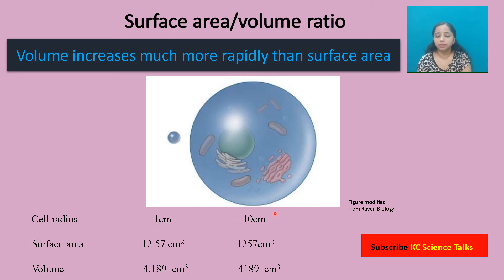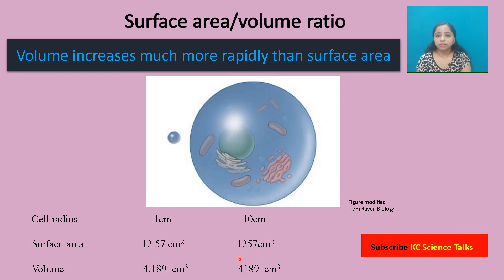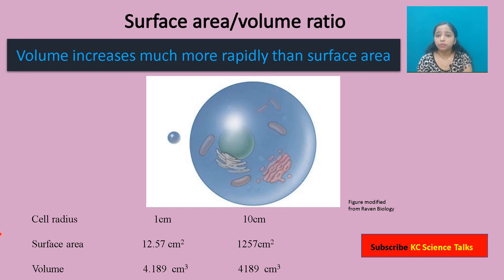By increasing the radius by a factor of 10, the surface area increases one hundred times and the volume increases one thousand times. So we can see that the volume of the cell increases at a much faster rate compared to its surface area. For a cell, its surface area is very important — the surface area should be large enough to support its volume.